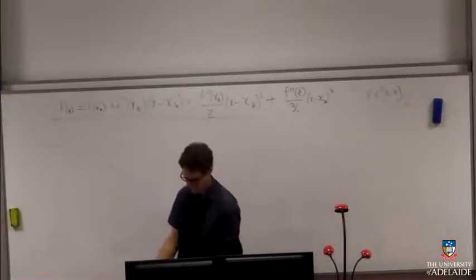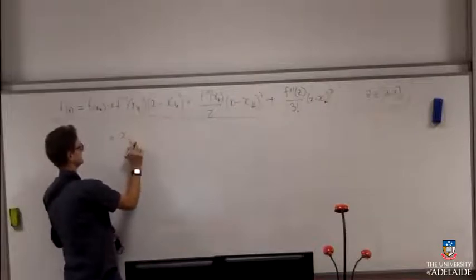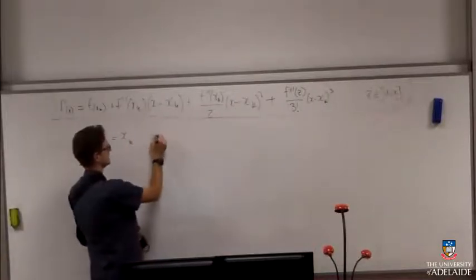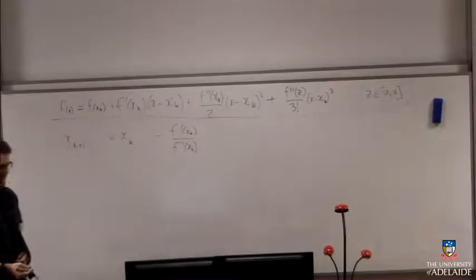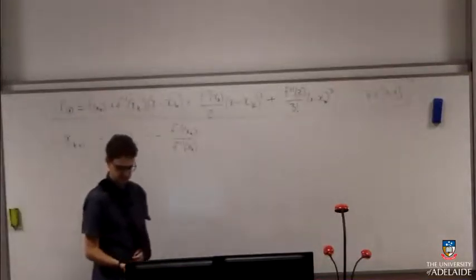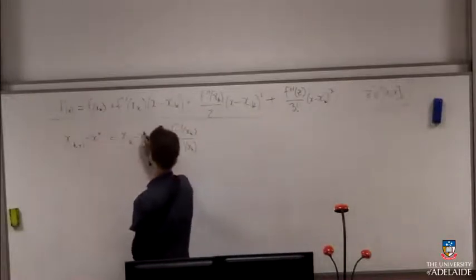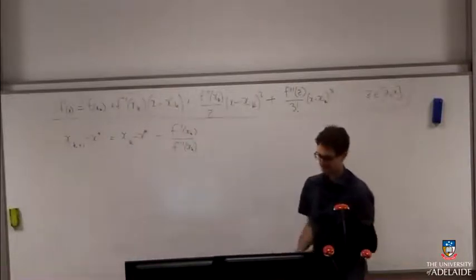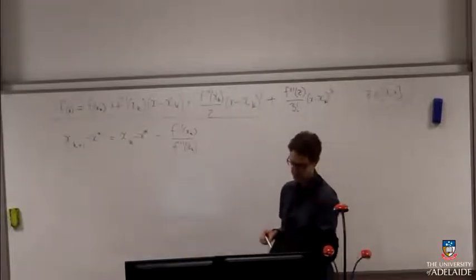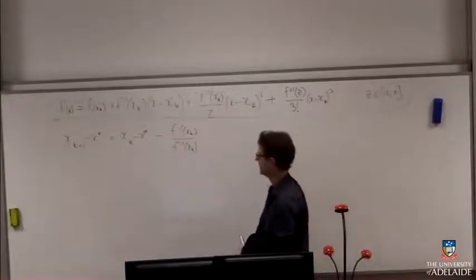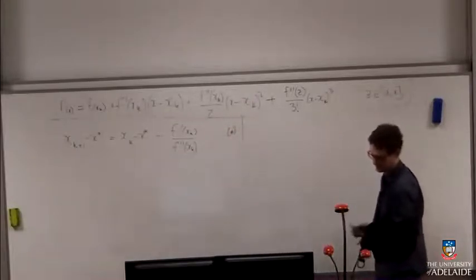Now let's start writing down some stuff about Newton's method. Newton's method is x_{k+1} equals x_k minus f prime of x_k over f double prime of x_k. For reasons that will become clear later, I'm going to shove in the true minimizer here — subtracting x* from both sides. Let's call that equation star because I'll use it in a bit.